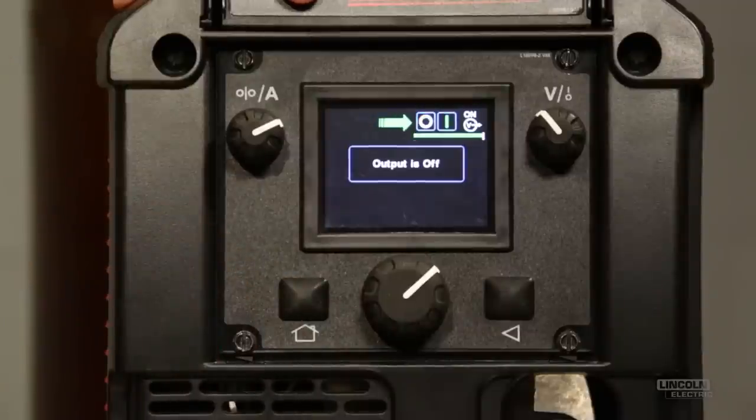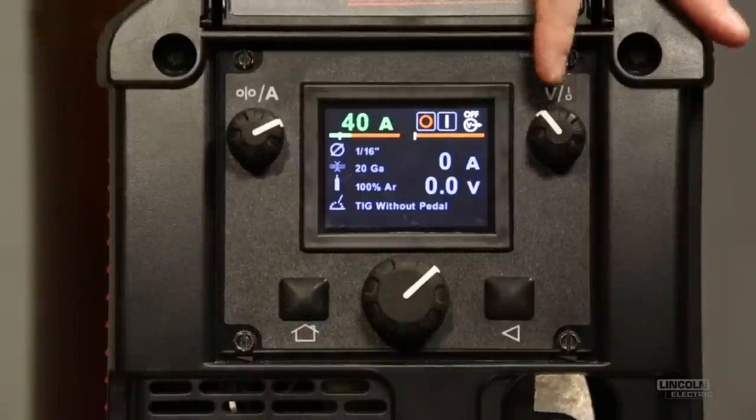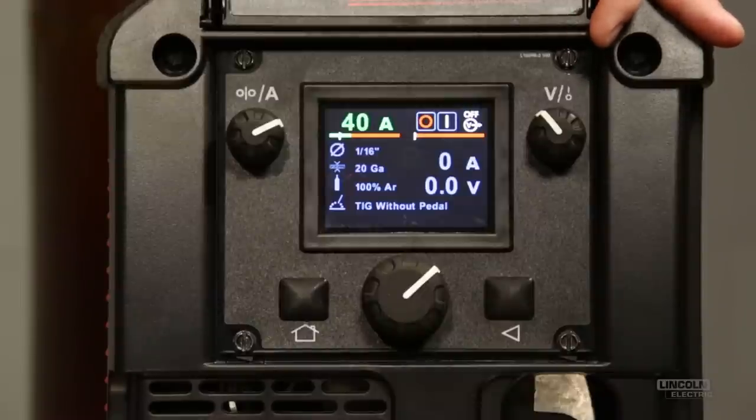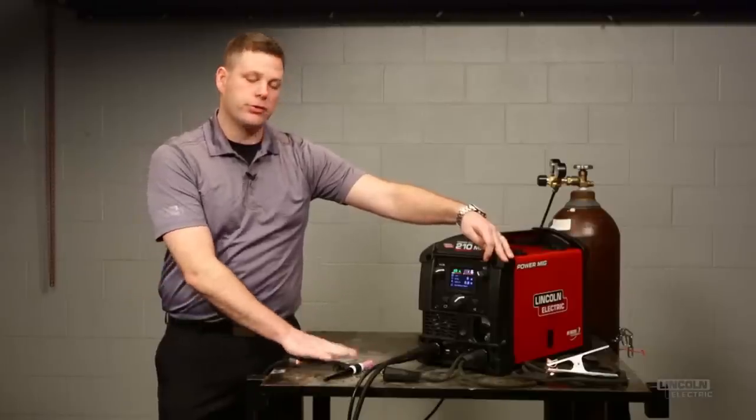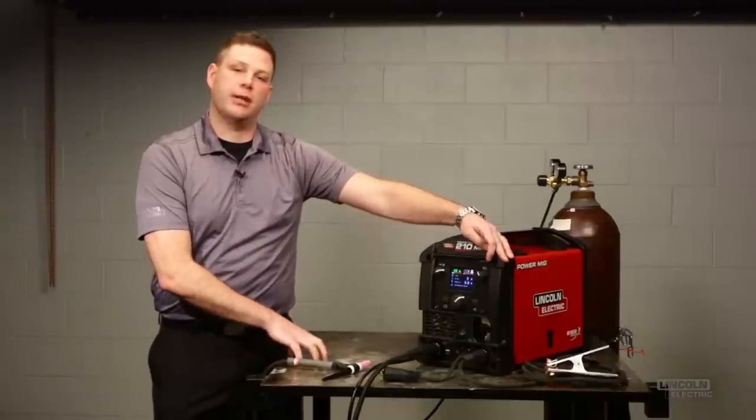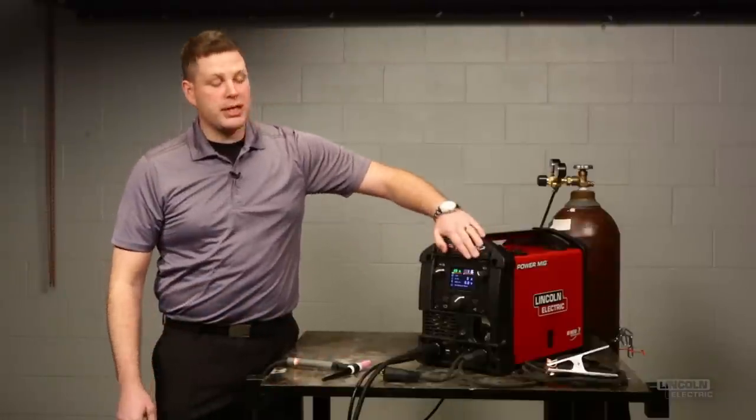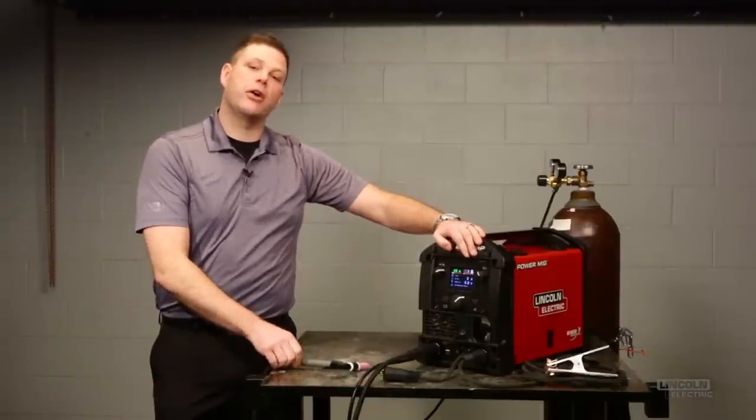Notice that an indicator pops up to remind you that currently the output to our TIG torch is off. We do this as a safety feature because the majority of users leave their TIG torch on the welding table itself. If this were to be live, you would have the potential for accidental arc strikes.